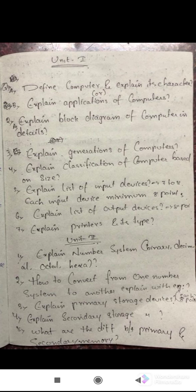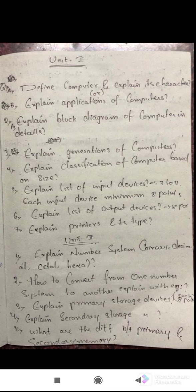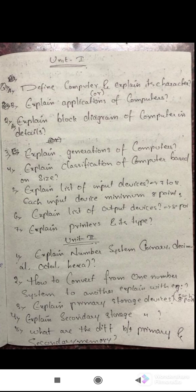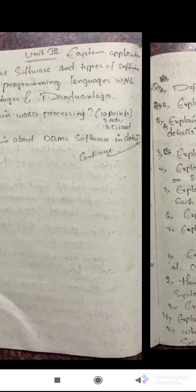The next question is: explain the list of input devices. If the question asks for input and output devices, you have to explain each and every input device with 8 to 10 points. If they specify devices like keyboard and mouse, elaborate only those. But if the question is generally about input devices, write 8 to 10 points per device. Similarly for output devices.